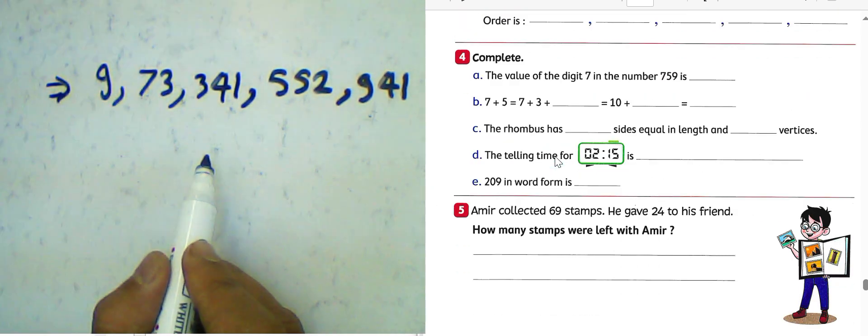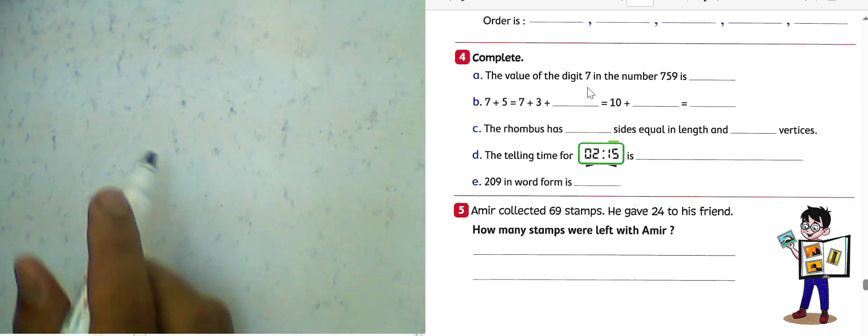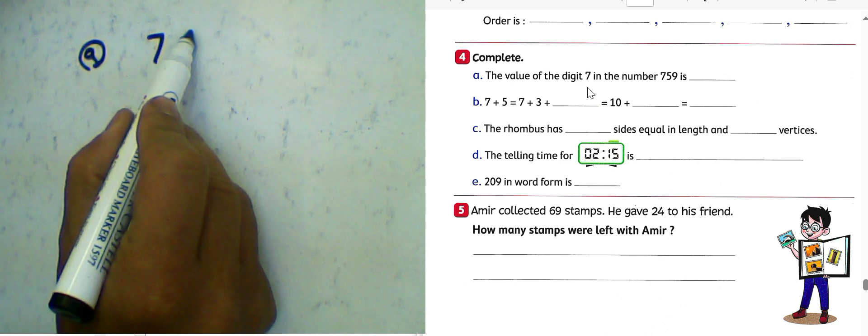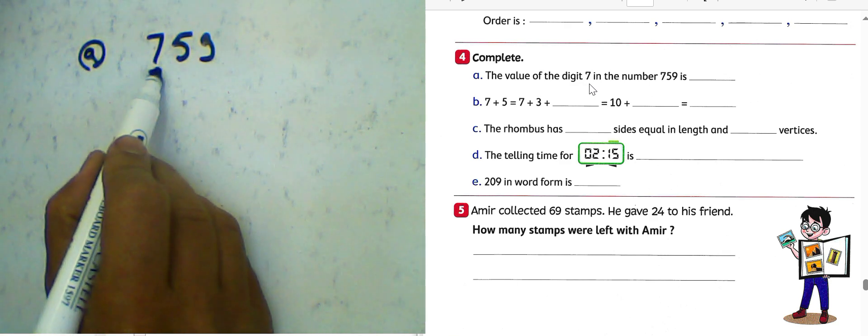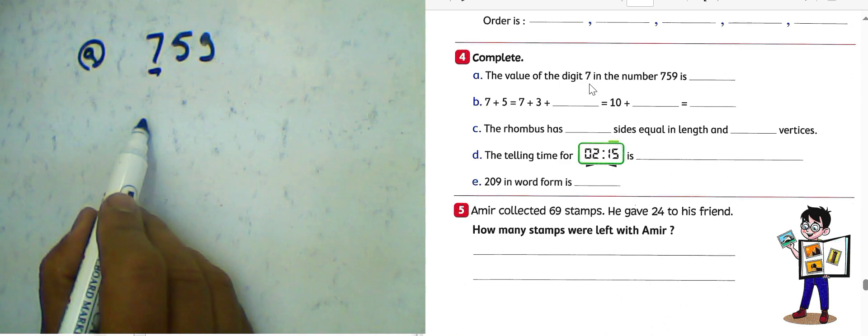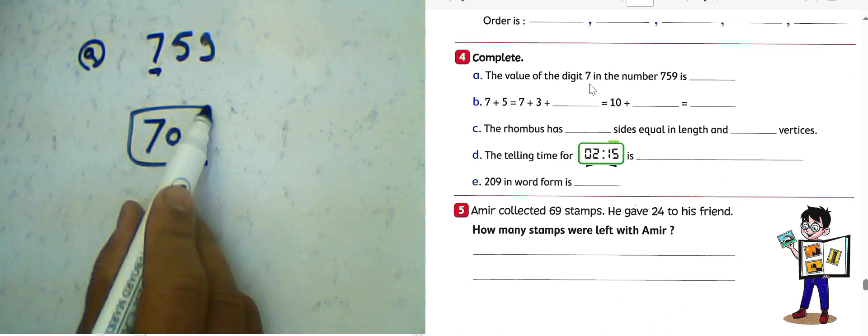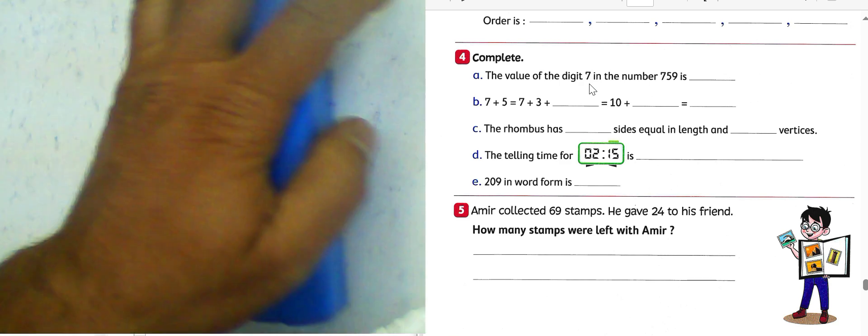Question number 4: Complete the value of the digit 7 in the number. This number, about letter A, he gives us 759. He asked about the value of the digit 7. 7 here lies in the hundreds. The value of the digit will be 700 because 7 lies in hundreds.